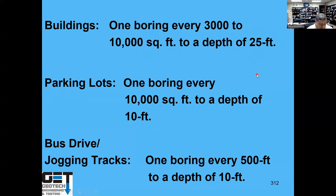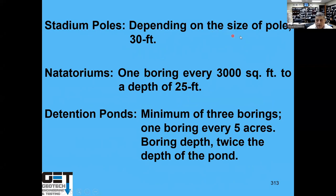For detention ponds, a minimum of three borings and one boring for every five acres of the detention pond, to a depth of twice the height of the pond. For running tracks, one boring every 250 feet to a depth of 10 feet. Tennis courts: one boring to a depth of 20 feet for every court — if you've got five courts, you do five borings to 20 feet; if you have one court, you do two borings to 20 feet. Bleachers: depending on the size, if they're heavy big bleachers you may have to do 40-foot borings; if small, 20-foot borings. That gives you general guidelines on geotechnical boring requirements for various school facilities.